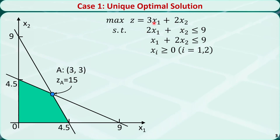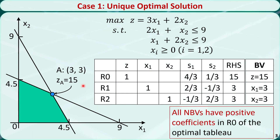This is a linear programming problem with two variables, and we can solve it using the graphic method. The optimal solution is a single point, (3, 3), and the optimal z value is 15. In the corresponding optimal tableau, we find that all non-basic variables have positive coefficients in row 0. It turns out that this rule is generally applicable to all linear programming problems with a unique optimal solution.